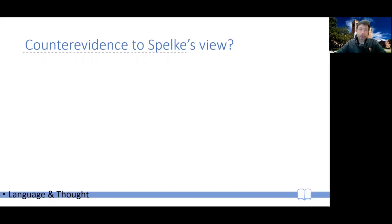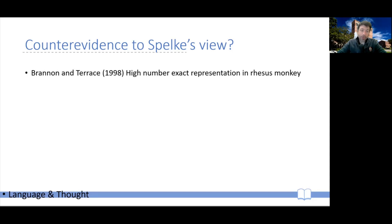However, there are some important counterexamples in the literature worth keeping in mind. First, Brannon and Terrace in 1998 showed that rhesus monkeys are actually capable of exact high number representations. Their experiment demonstrated that rhesus monkeys can precisely understand the numerosity of numbers five through nine — numbers that should fall outside the reach of the subitizing module. And given how the experiment was designed, it's very unlikely the monkeys were using the number sense to solve the problem.